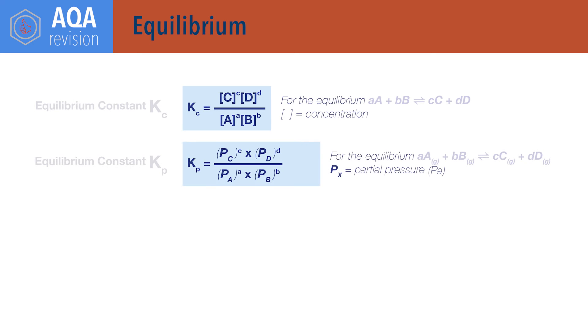Kp equals partial pressure of products times each other divided by partial pressures of reactants times each other, each raised to the power of their molar ratio in the balanced reaction equation. Where Kp is the equilibrium constant for gases based on partial pressures.